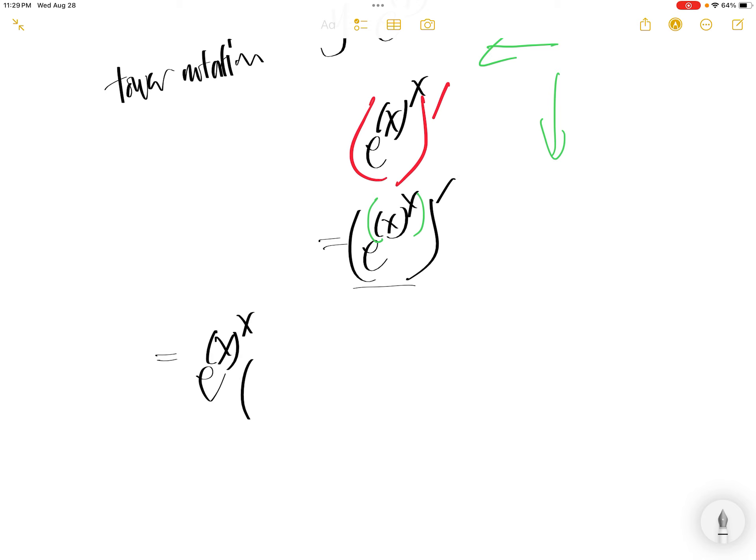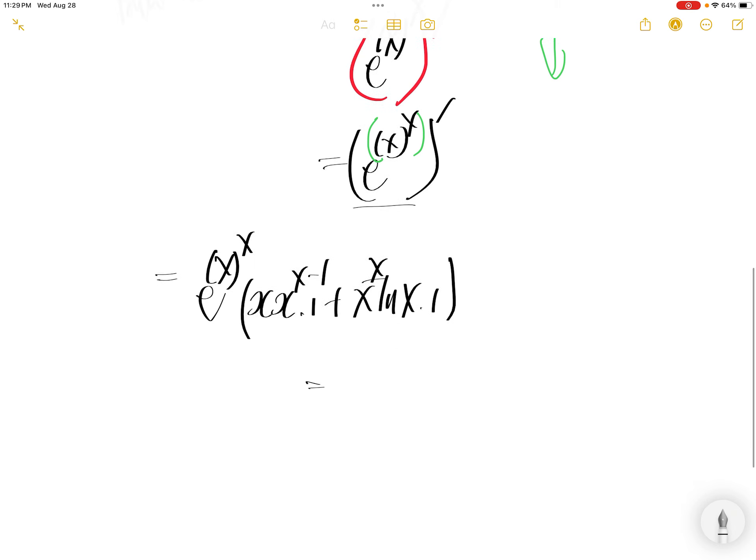times the derivative of x to the power of x will be x comes down, x minus 1 times 1 here. And then x to the power of x ln x, the derivative of this is 1. And then e to the power of x to the power of x.